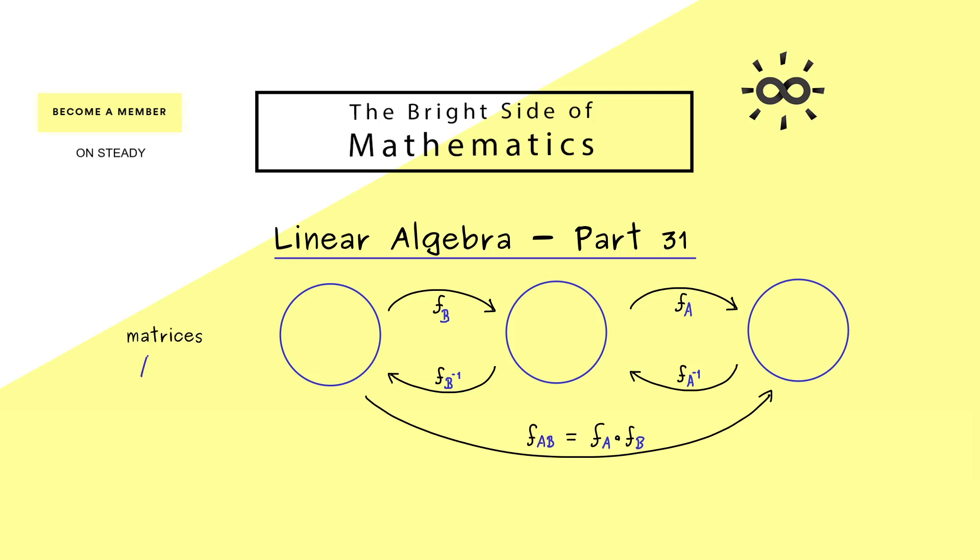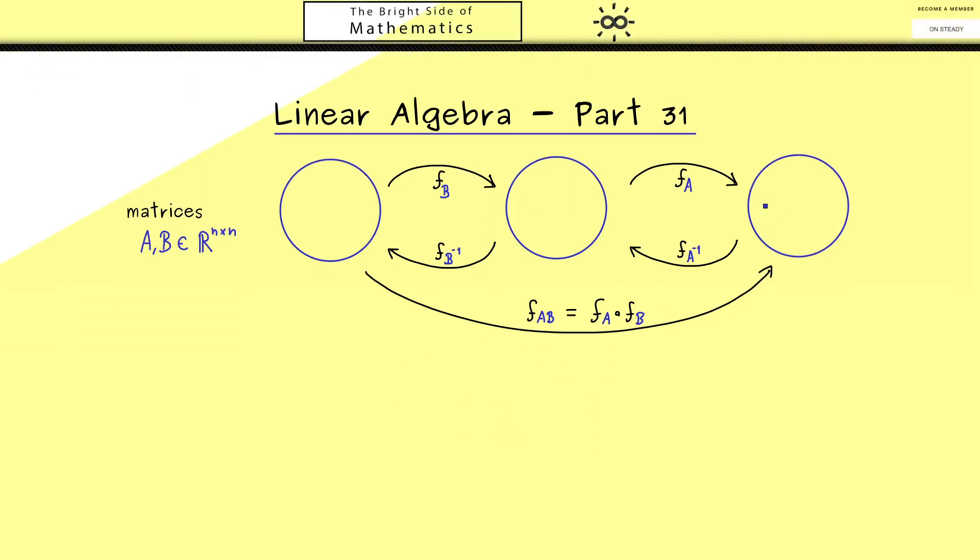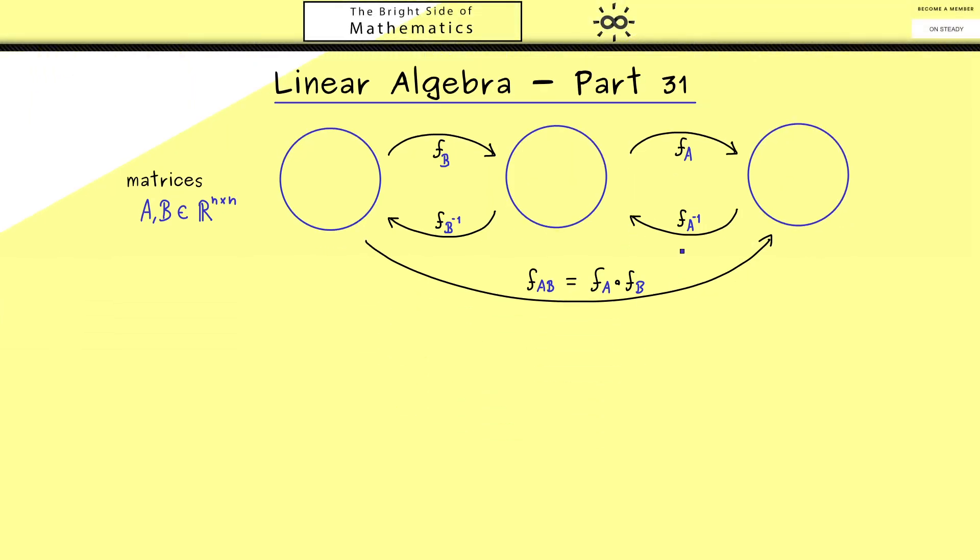Okay, and now the question is, what can we say about the inverse of this composition? Obviously, if you look at the picture, you already see the connection here. The inverse is simply given by the composition of both inverses. In other words, we have F_B inverse after F_A inverse is equal to the inverse of F_AB, which is again related to the inverse of this matrix here.